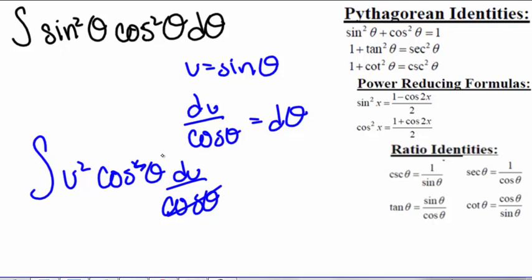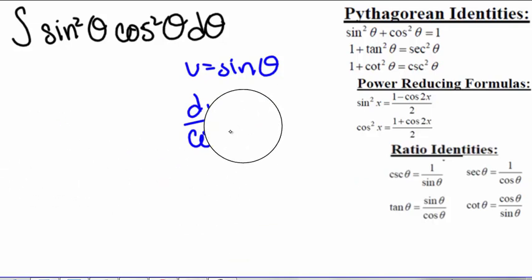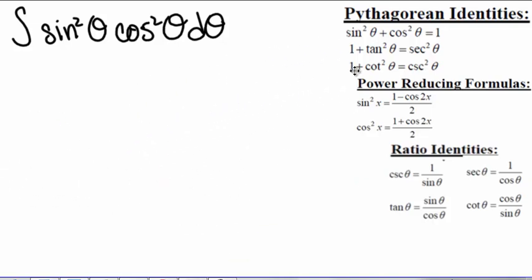The same thing happens if we try u equals cosine of theta. So that tells me that we have to try something else. We either need to get this in terms of all cosines or all sines or something else. Looking at our identities, we could get things in terms of all sines or all cosines using the Pythagorean identity, but then we're still going to have things squared, which may or may not work out.